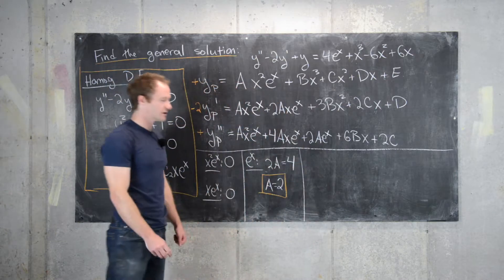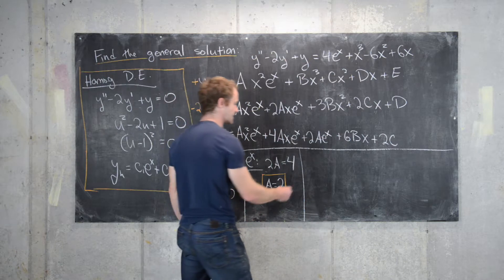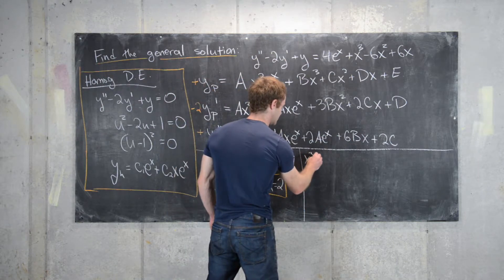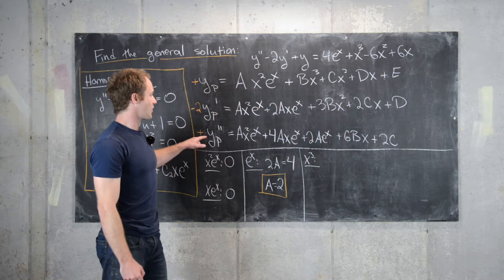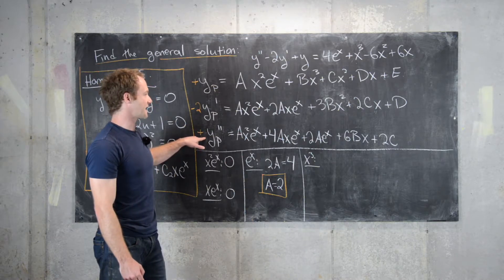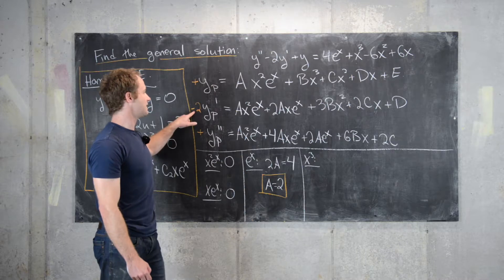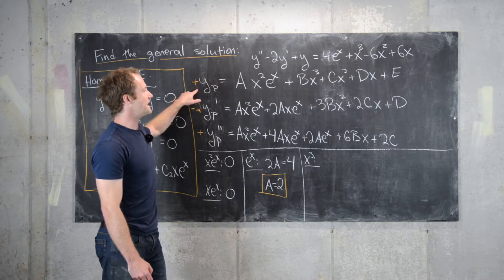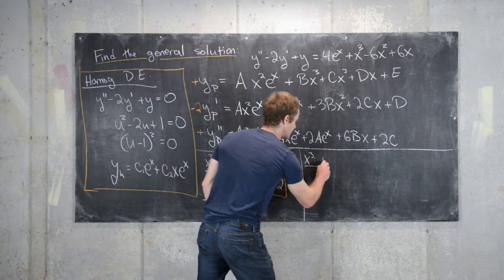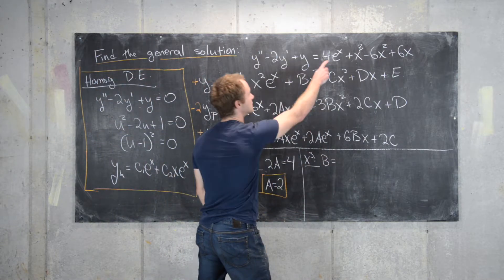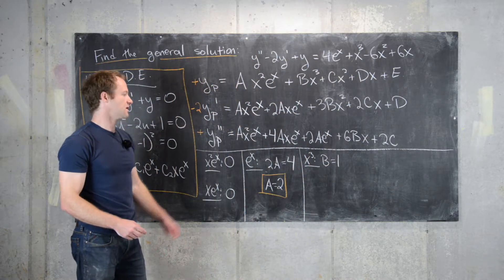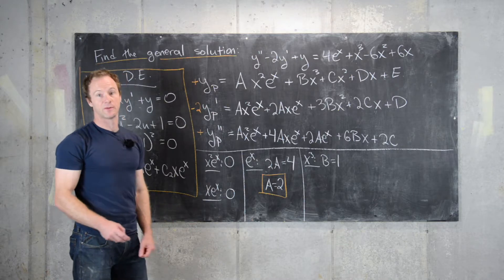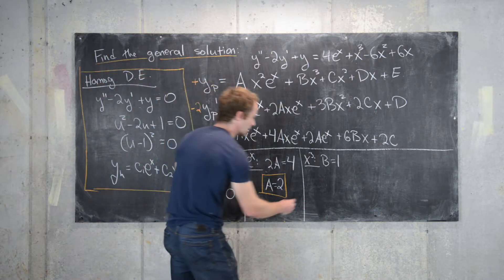Now let's look at the coefficients of x³. There are none in the second derivative, none in the first derivative, and b of them in the zeroth derivative. The right-hand side has 1·x³, so b = 1.